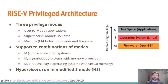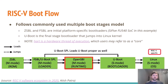RISC-V has a privilege architecture used for running a full operating system like Linux. There are three privilege modes: machine mode or M-mode where you find the bootloader and firmware; supervisor mode or S-mode where you find the OS kernel like Linux; and user mode or U-mode where applications run. There's also a hypervisor spec in draft that adds a modified S-mode. The RISC-V boot flow is similar to ARM systems, but there's a piece in the middle called OpenSBI that you may not be familiar with.